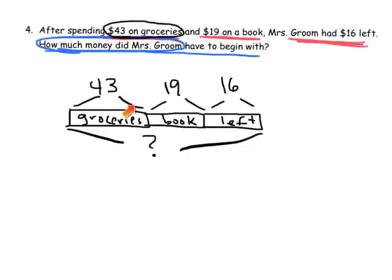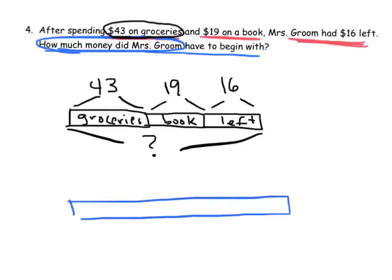And you'll notice I kind of did it differently. I started with just a little piece of a bar, and then I added on to it, and then I added on to it. Another way we could have drawn this, and I'll do it in blue, is we could have drawn the total first. It says, how much did Mrs. Groom have to begin with? So, the total is our question mark.